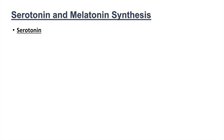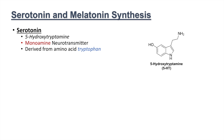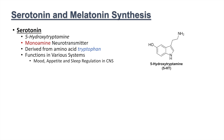Serotonin is also known as 5-hydroxytryptamine, and it is a monoamine neurotransmitter. It's derived from the amino acid tryptophan. Serotonin has functions in various systems within the body. In the central nervous system, it's involved with mood, appetite, and sleep regulation.